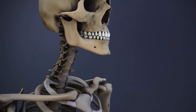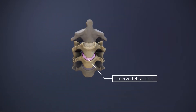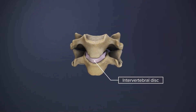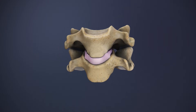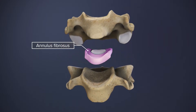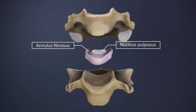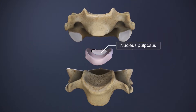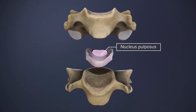Between the vertebrae is an intervertebral disc that provides flexibility and shock absorption. The disc is made up of a tough outer ring called the annulus fibrosis, which encapsulates a gel-like interior called the nucleus pulposus.